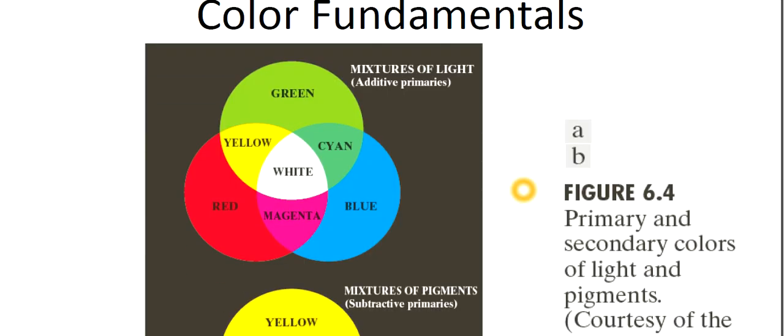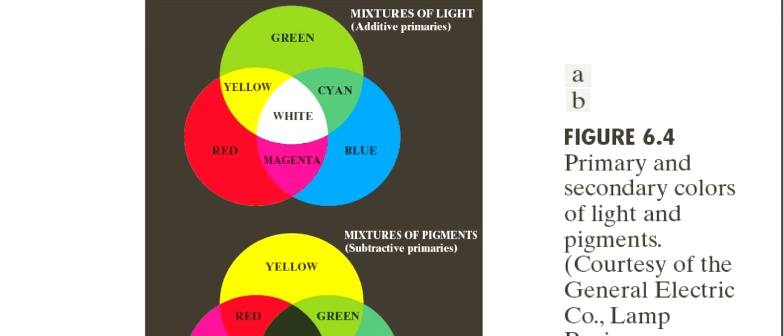Now look at this figure. First one is the mixture of light. This is green, this is red, and blue. When I'm combining green and red, I have got yellow, then you see white, and you see cyan as a combination of green and blue, magenta as a combination of red and blue, and white is a combination of all of them: red, green, blue.